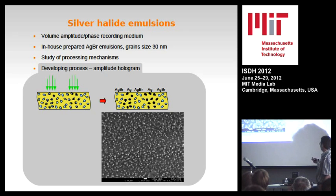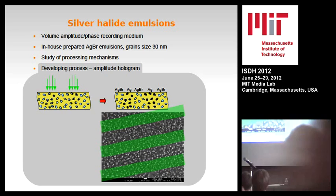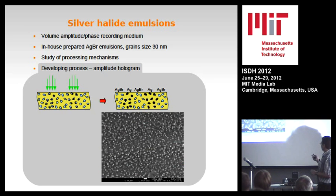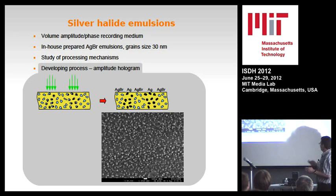In the SEM image of the exposed and developed layer, you can see two types of grains. In the green areas there are smaller, more elliptical grains, which are the metallic silver after development. The rest — the circular grains — are the original nanoparticles of silver bromide.